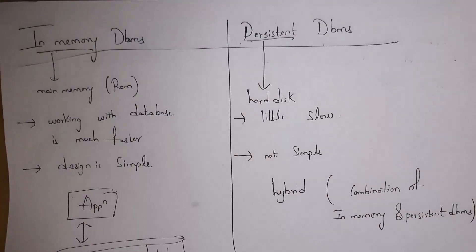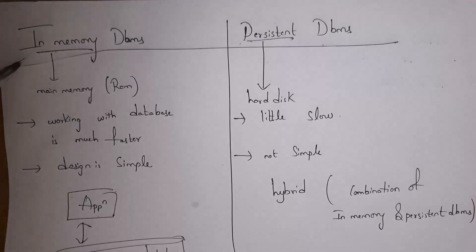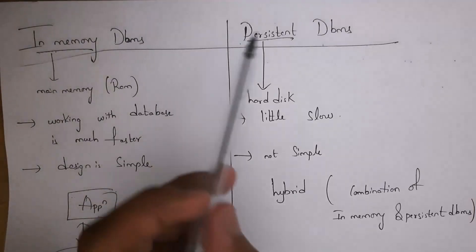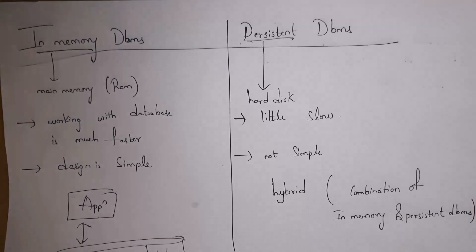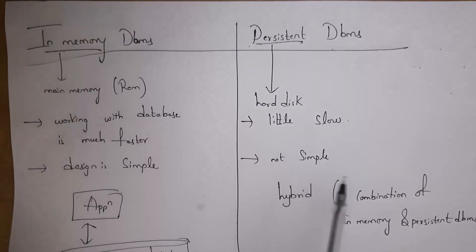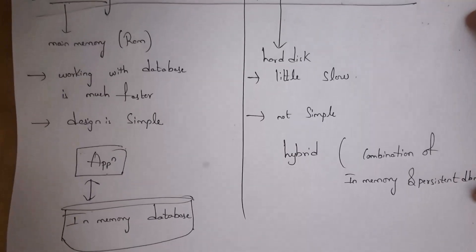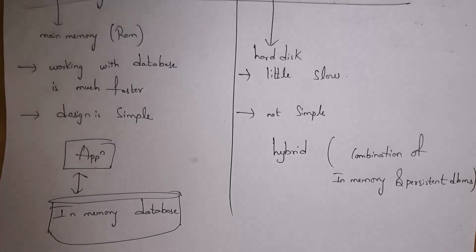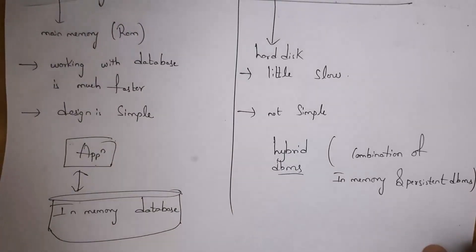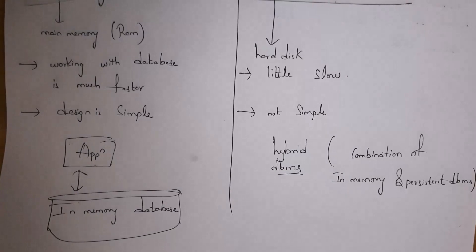In-memory DBMS stores data in RAM, so once we shut down the system all data is lost — it is temporary storage. Persistent DBMS stores data on the hard disk, so even if we shut down the system the data remains. In-memory DBMS is much faster but has a simpler design, whereas persistent DBMS is slower and has a more complicated design. Hybrid DBMS is a combination of both — based on your requirement you can store data either in RAM or hard disk.